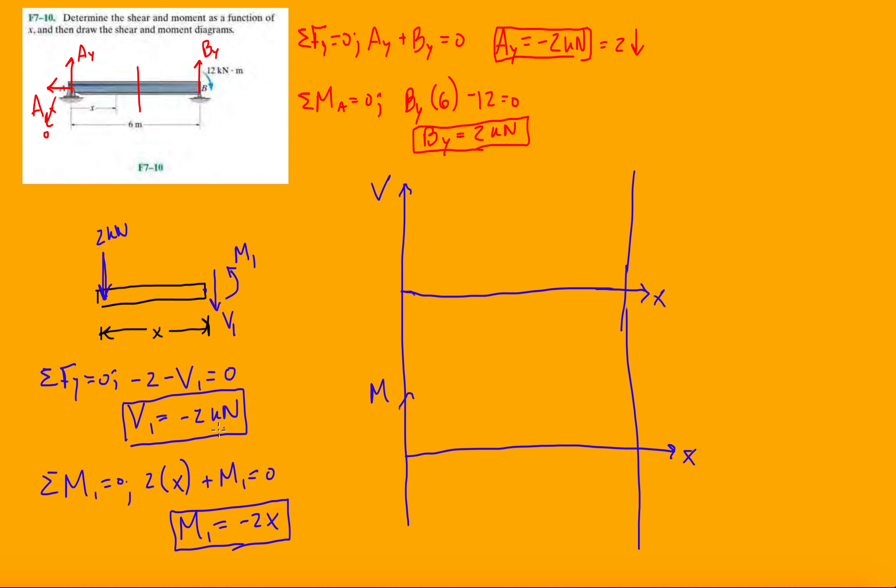So, for shear, the shear diagram, we have, we found out that from this function corresponds to X between 0 and 6. So, it's telling us that we have a constant negative shear. So, negative 2, and it's going to be constant throughout the whole beam.